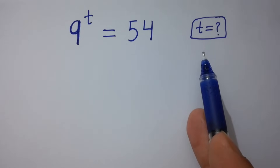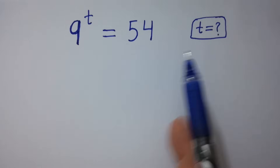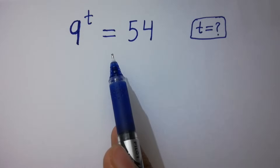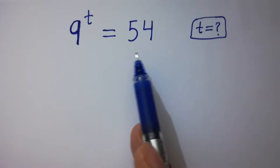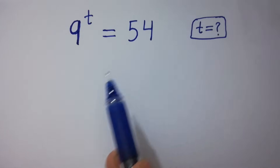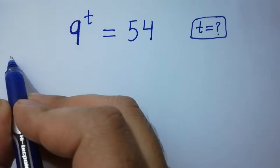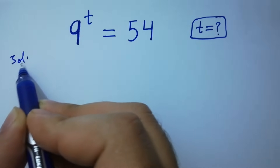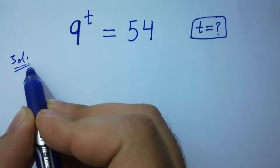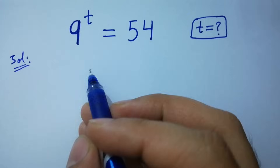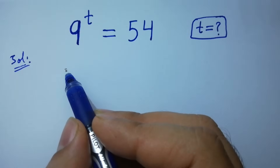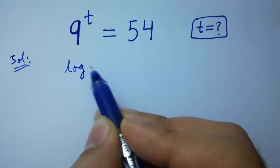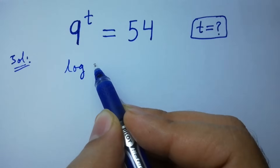Find the value of t if 9 to the power t equals 54. Let's have a solution. Take log on both sides.